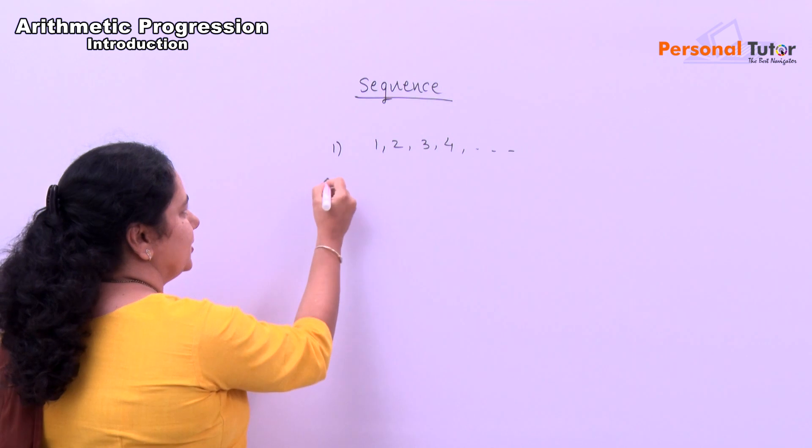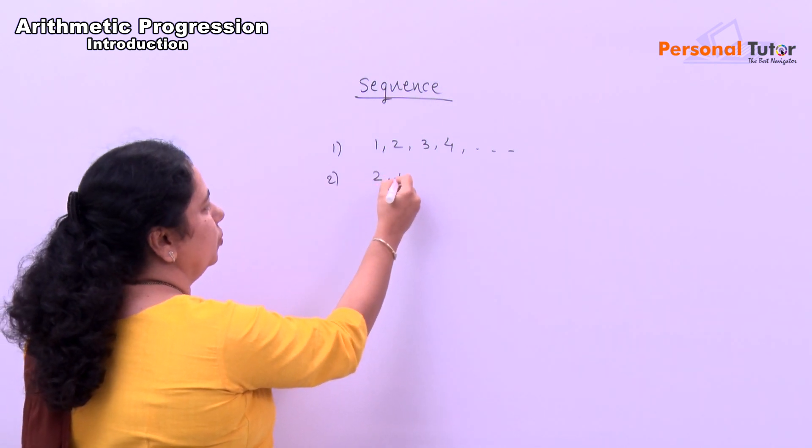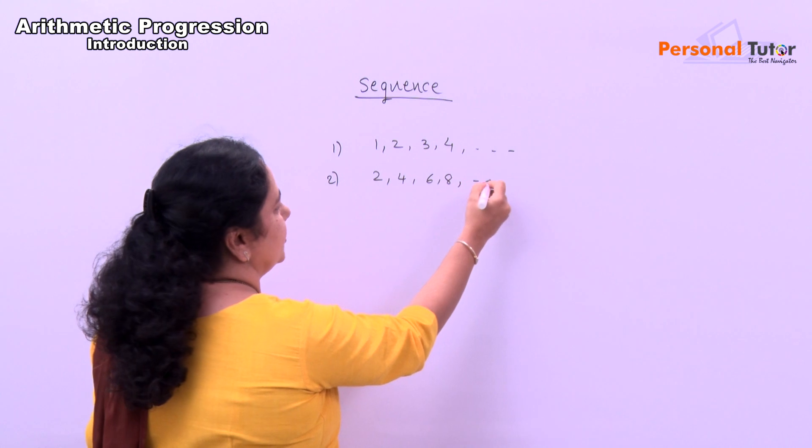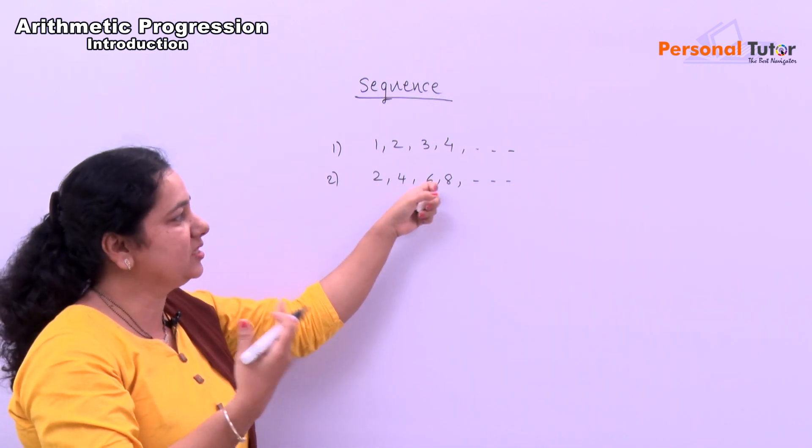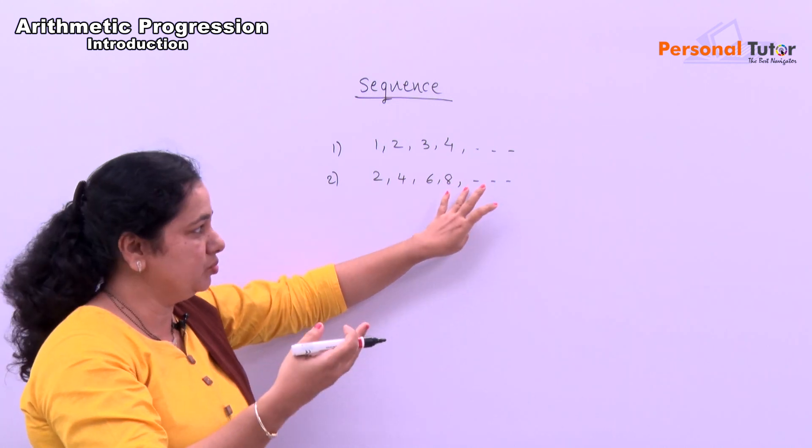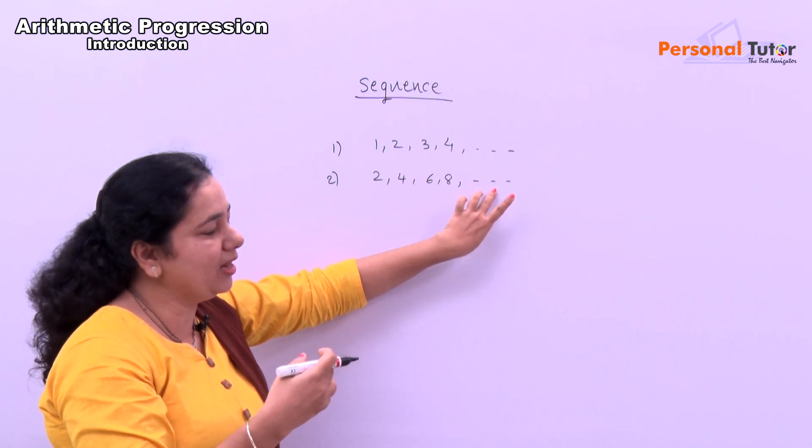Another example. Second example, suppose it is 2, 4, 6, 8. Then just tell me what is next number? First number is 2, then 4, 6, 8. Next number is what? Number 10, then 12, then 14.